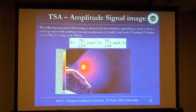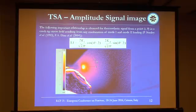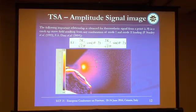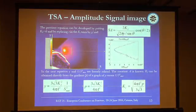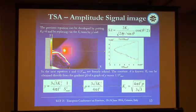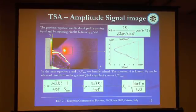With thermo-elastic stress analysis it is also possible to evaluate the stress intensity factor. We can relate the thermo-elastic signal to the stress intensity factor during the test. By considering an area around the crack tip position, we can evaluate the trend of the maximum signal during the test, and thus evaluate the stress intensity factor knowing only the calibration constant A. For example, considering a dog bone specimen with a fixed load, and knowing the stress during the test, it is possible to evaluate the value of A.